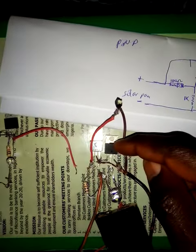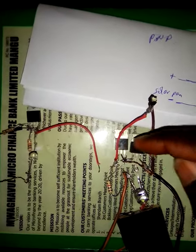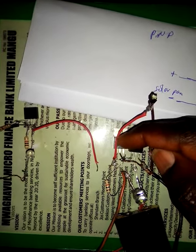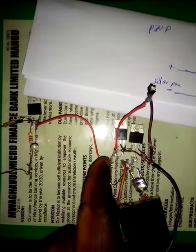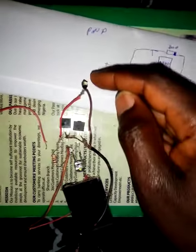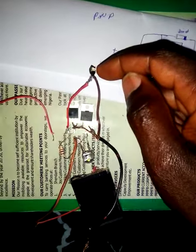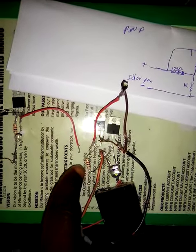This is the bulb. This is a MOSFET — the PMP type, which is an N-type. This here is an NPN transistor. This is a 1K resistor that switches it on. The transistor takes care of switching it on, while the optocoupler takes care of switching it off.